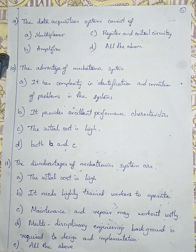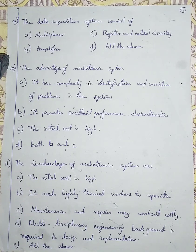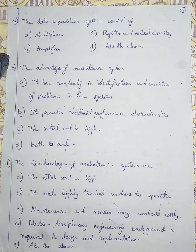Question number 9: Data acquisition system consists of. Option A is multiplexer. Option B is amplifier. Option C is register and control. Option D is all the above. Registers are used for memory and control purposes. Multiplexers are also used for storing data. Amplifiers increase signal intensity — if sound is too low, it will be increased using software. All these come under the data acquisition system. So the answer is option D, all the above.